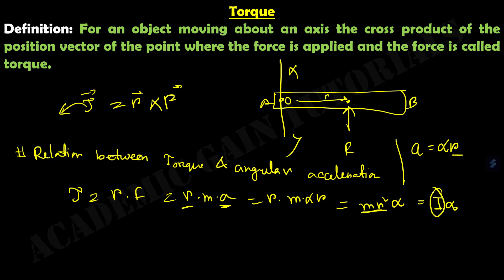We will discuss moment of inertia in detail in the next lecture. For now, remember that moment of inertia is the product of mass M and the square of the position vector R — that is, I equals M R squared. So the relationship between torque and angular acceleration is: torque equals I times alpha.